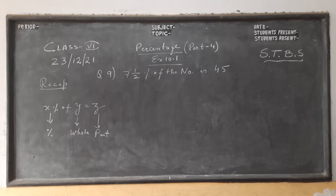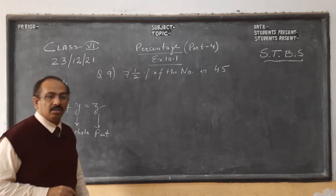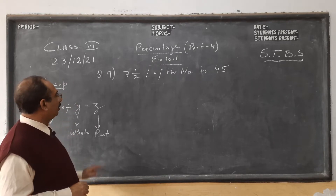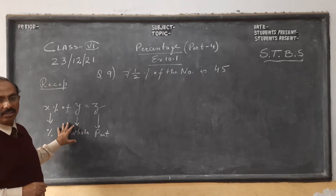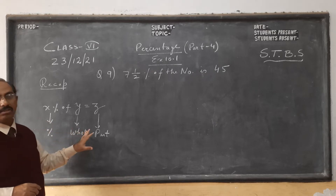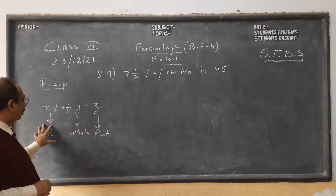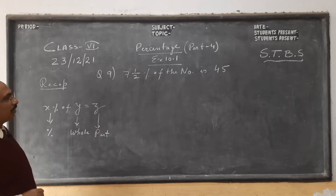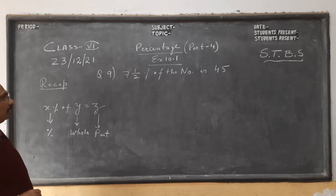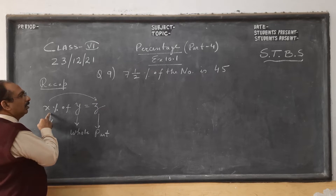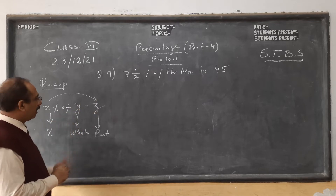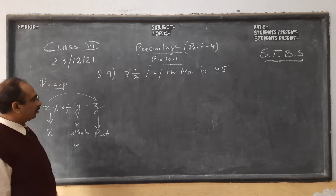Hello children, we move on to Part 4 of our lesson on percentage. Here we will see how we solve questions of this pattern. Let us recapitulate. The format I have given you earlier: percentage of whole is a part. In this particular question, 7 and a half percent of a number is 45. So we have the percentage and part given, and we have to find the whole.